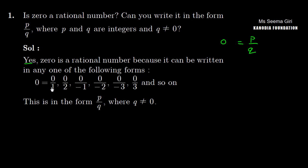0 can be written as 0 upon 1, 0 upon 2, 0 upon minus 1, 0 upon minus 2, 0 upon minus 3, 0 upon 3, and so on.